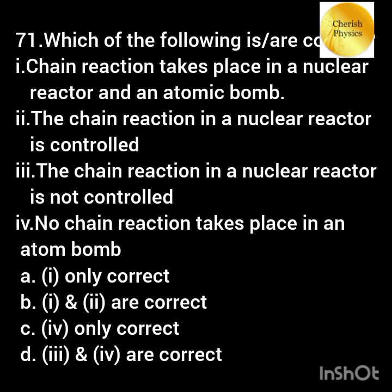Which of the following statement is correct? First, chain reaction takes place in both a nuclear reactor and an atomic bomb. Second, the chain reaction in the nuclear reactor is controlled. Third, the chain reaction in a nuclear reactor is not controlled. Fourth, no chain reaction takes place in an atom bomb.